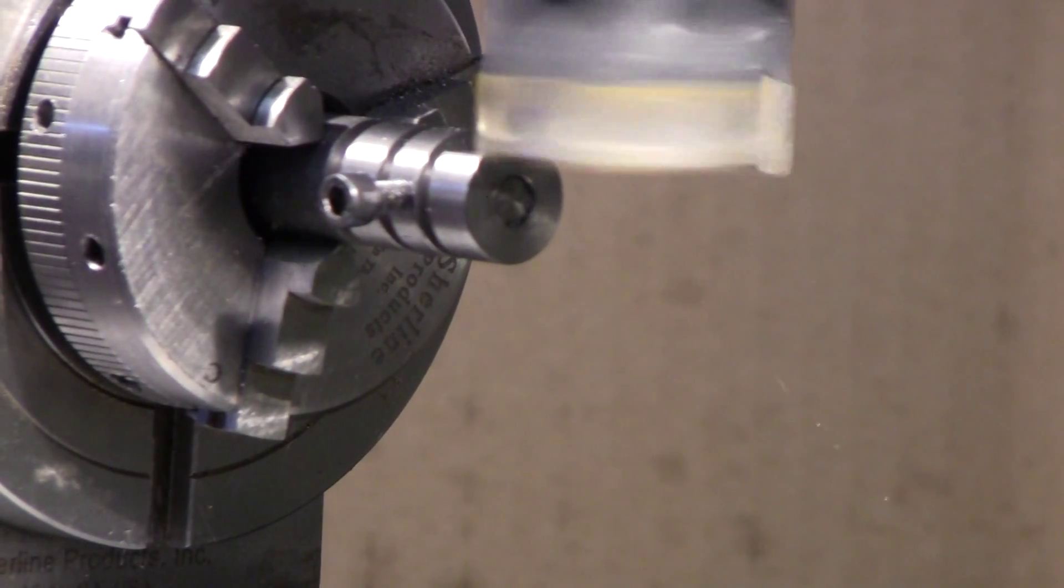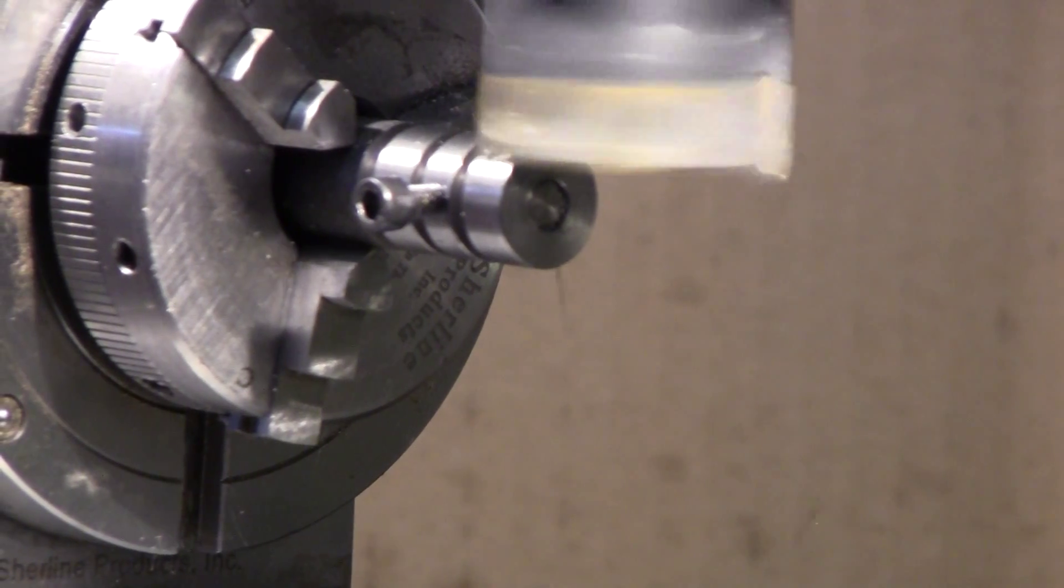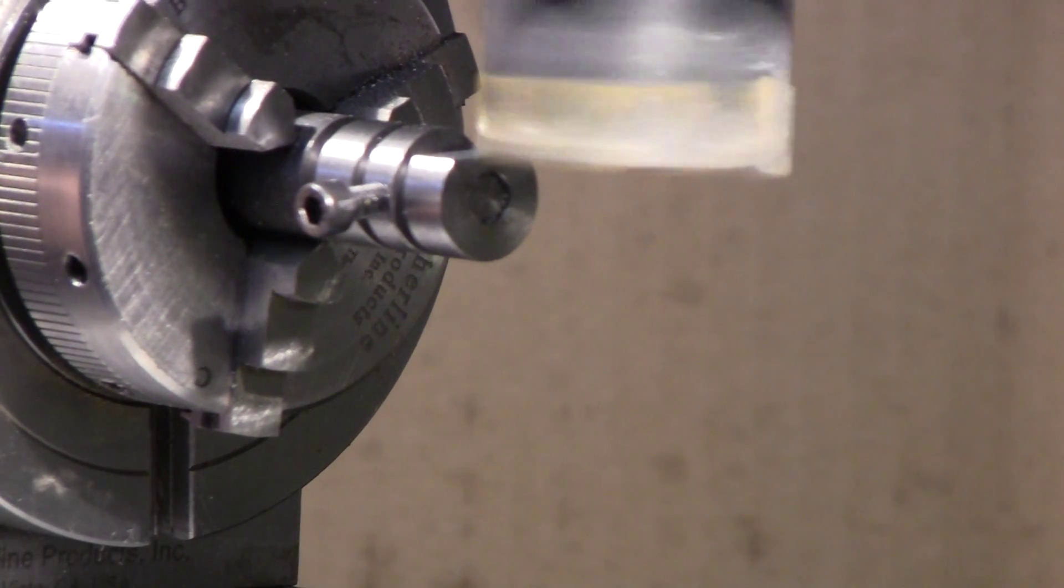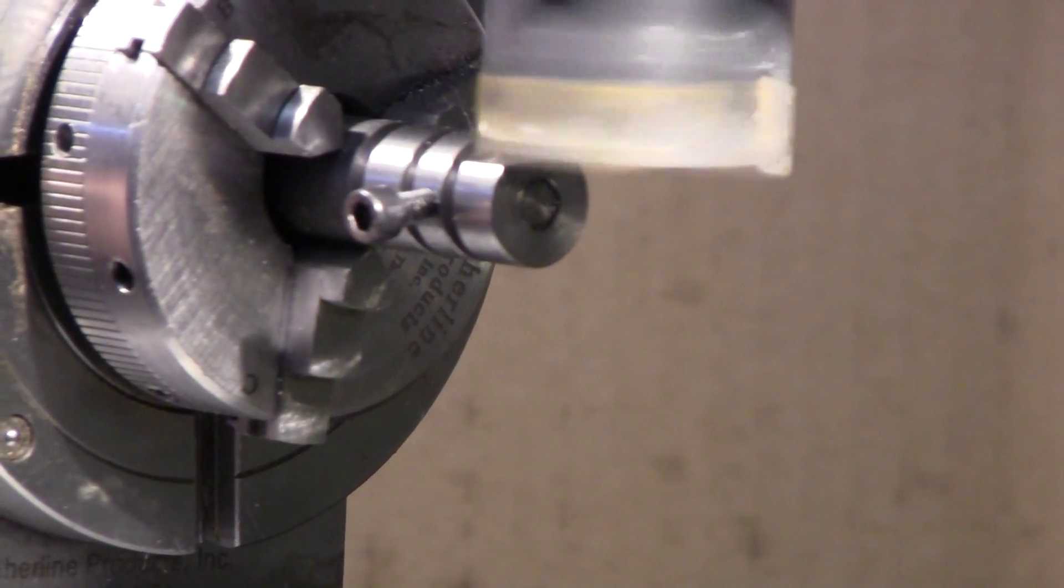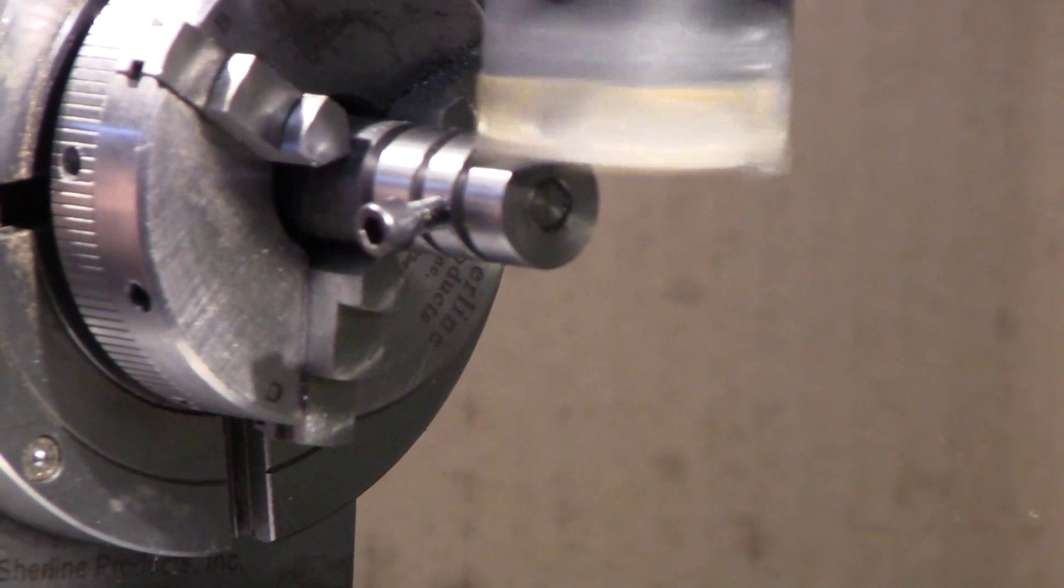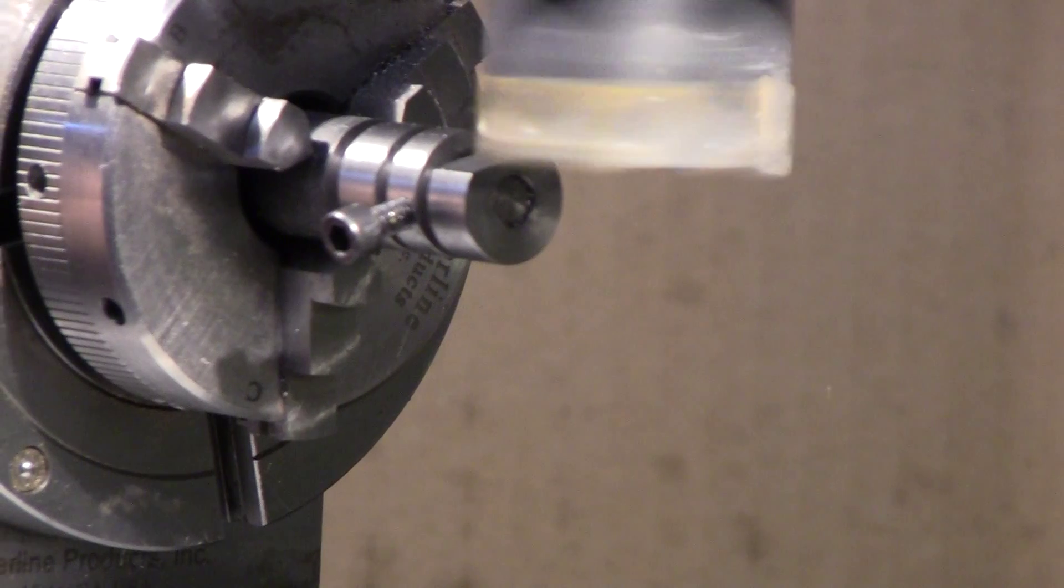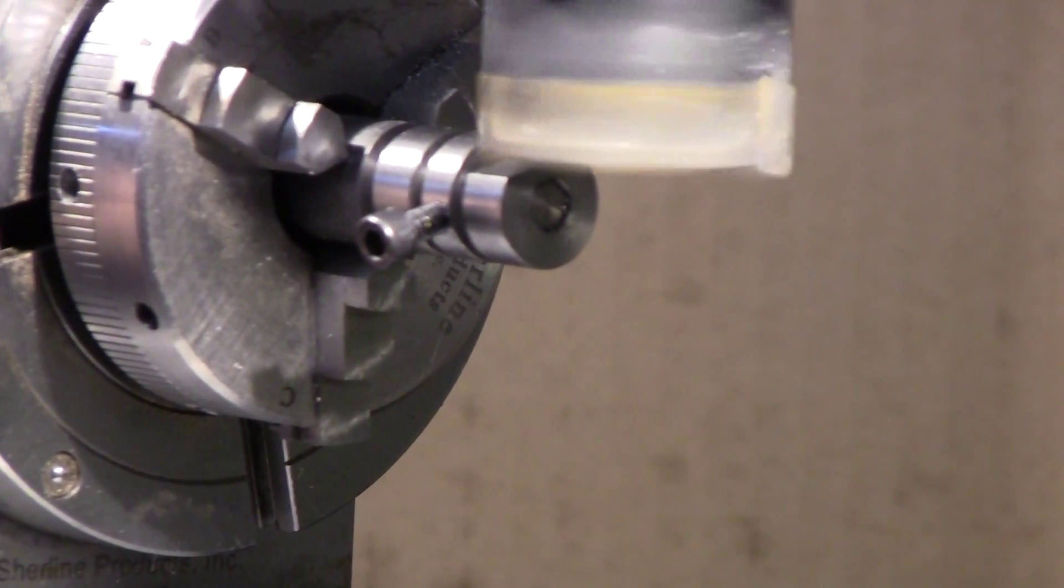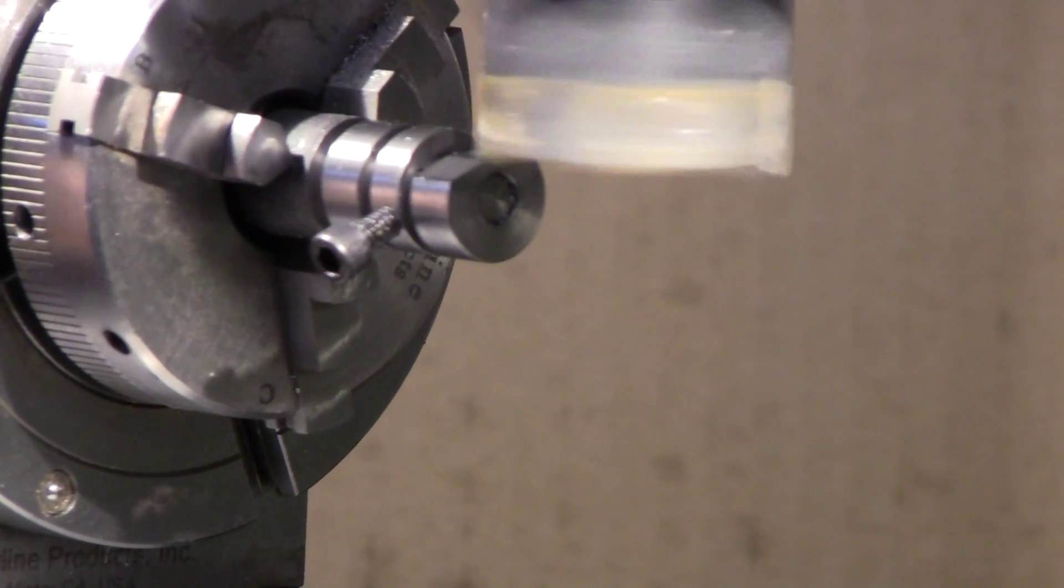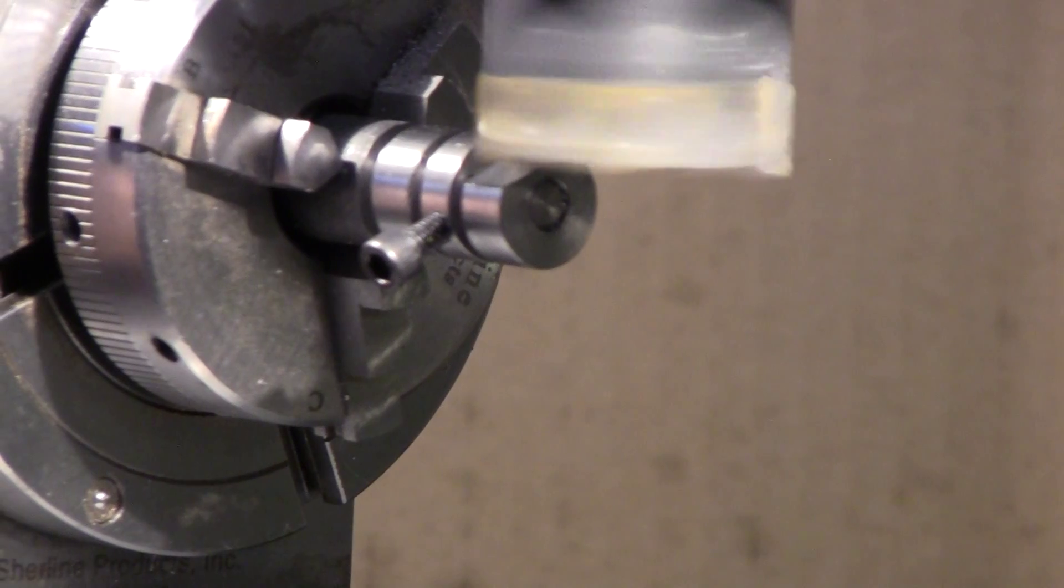There, we're down to a hundred thousandths. And now all you do is turn this about five degrees, the rotary table, take another touch. Five degrees, take a touch. Five degrees, take a touch. Pretty simple. It doesn't take too awfully long.